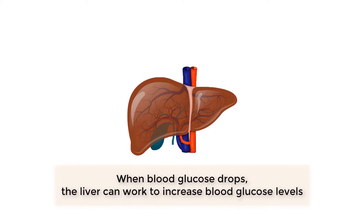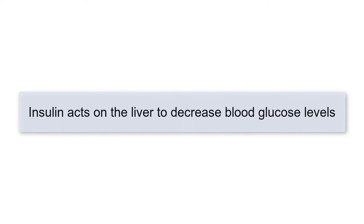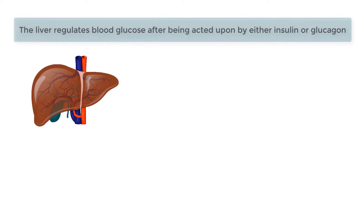When blood glucose drops, the liver can work to increase blood glucose levels. When blood glucose levels rise, the liver can respond by acting to decrease blood glucose. The response to an increase in blood glucose will be reviewed first. Insulin acts on the liver to decrease blood glucose levels. The liver regulates blood glucose after being acted upon by either insulin or glucagon.